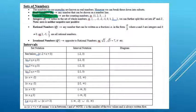By the time you're four years old, you can probably count up to 10: one, two, three, four, five, six, seven, eight, nine, ten. Those are our counting numbers, but mathematicians refer to them as the natural numbers, and they use the symbol N.